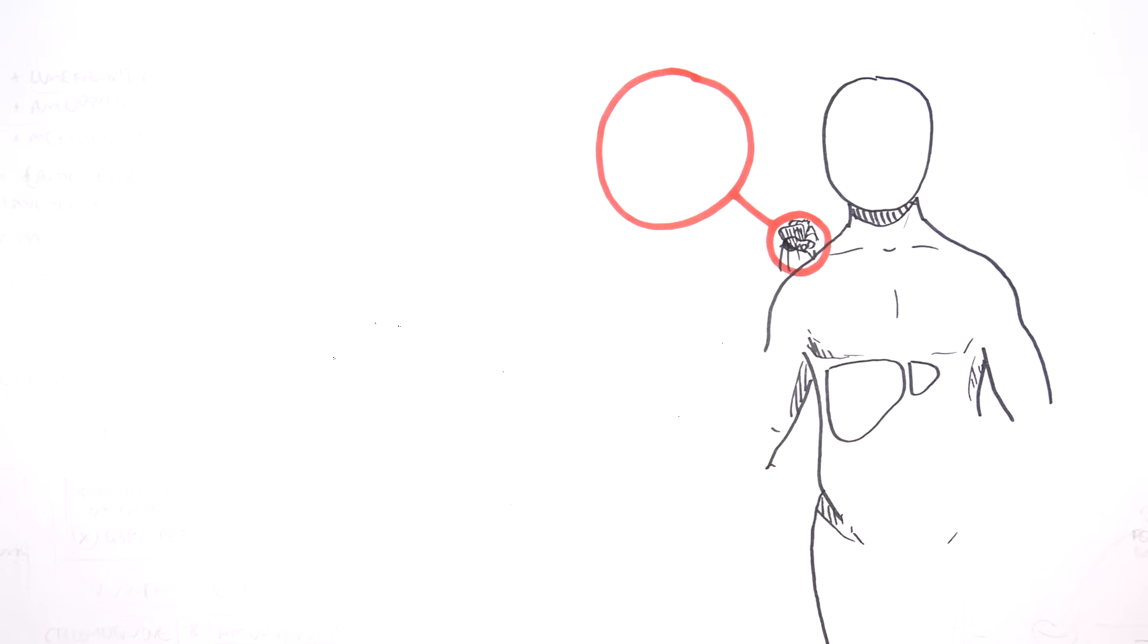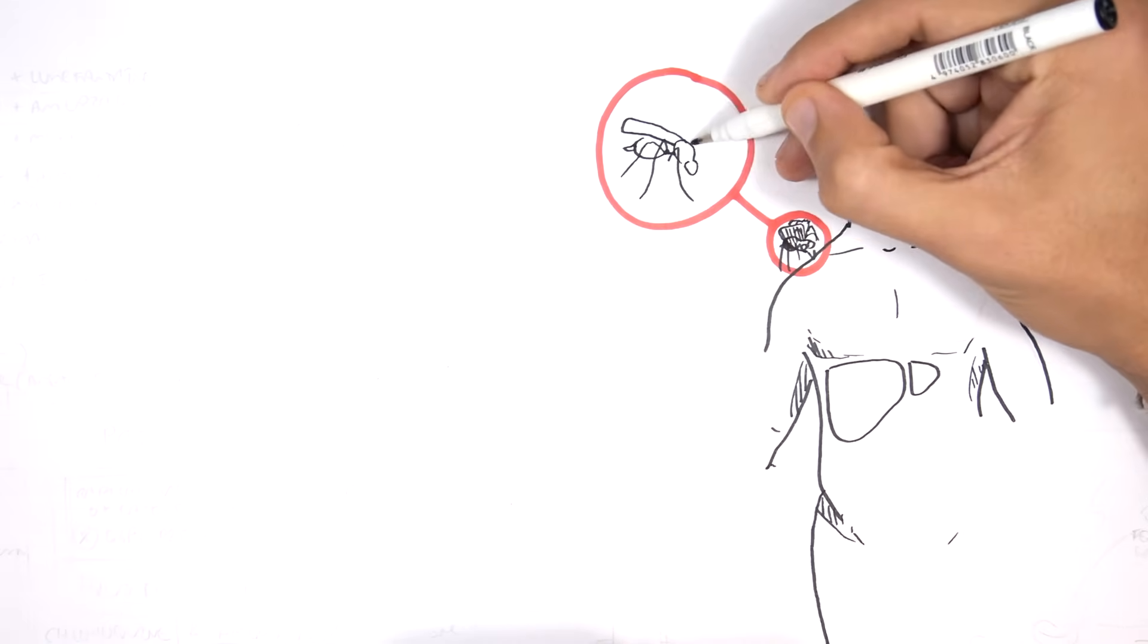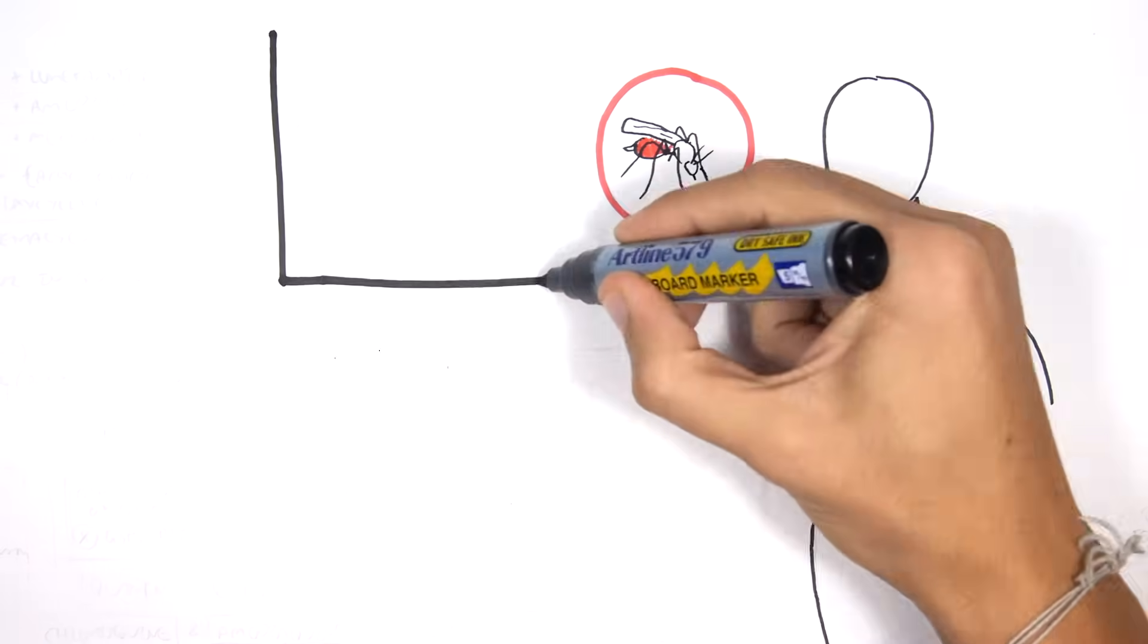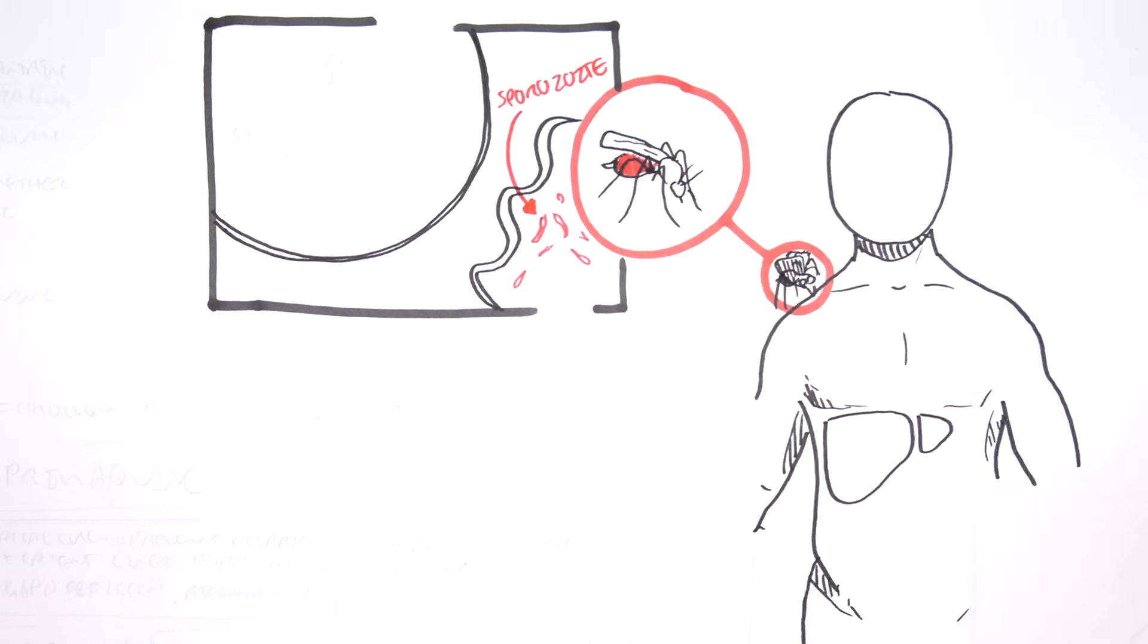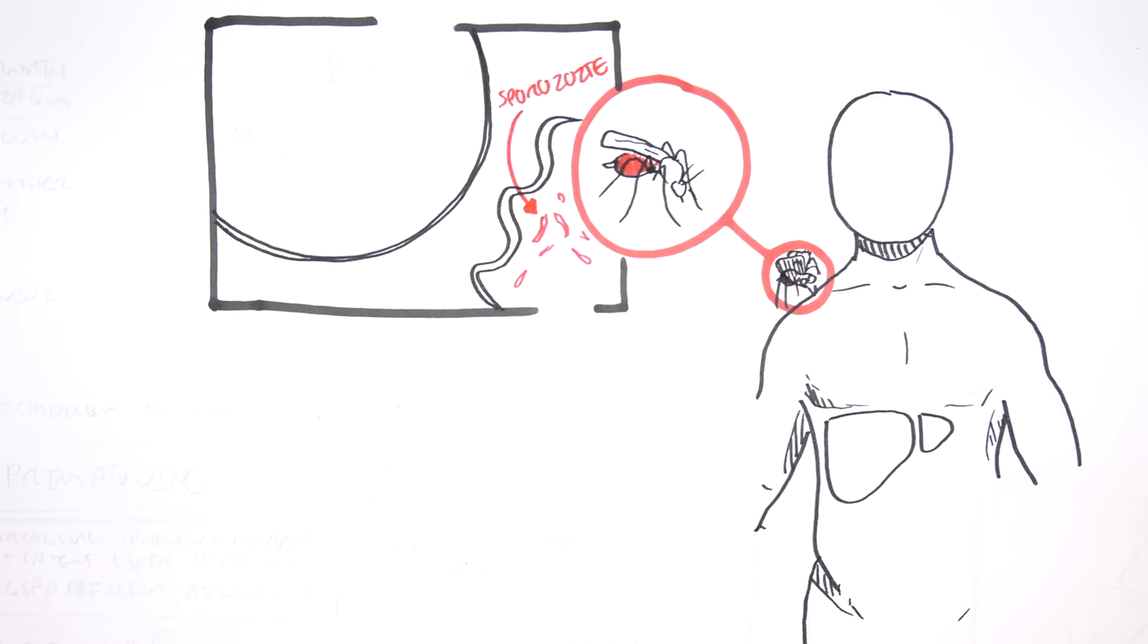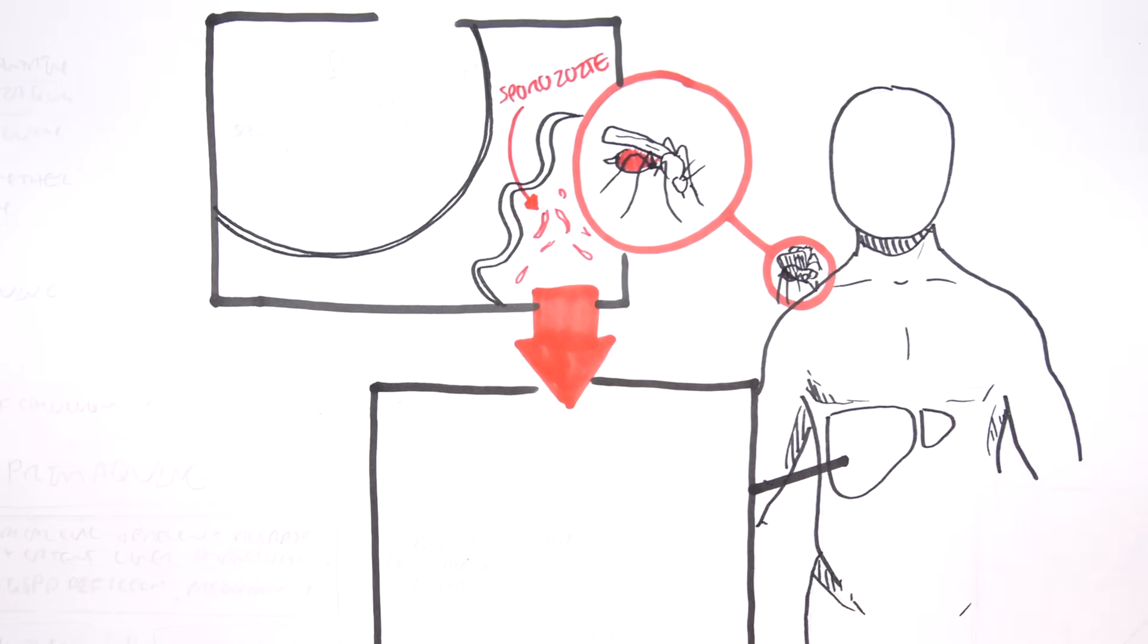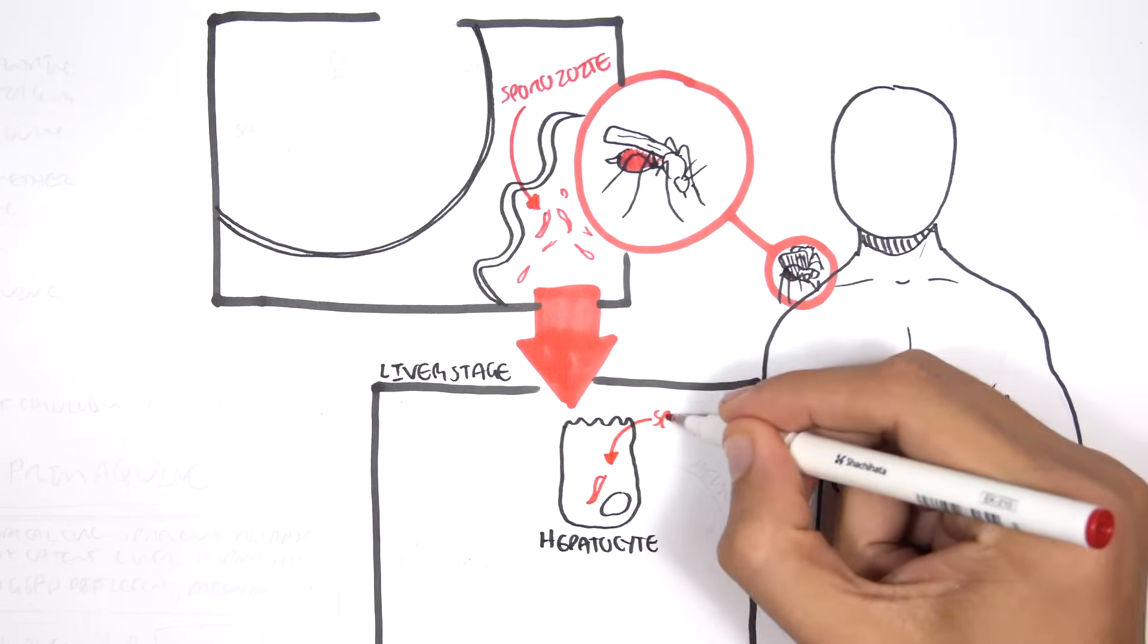The parasite responsible for malaria are the plasmodium parasites. The plasmodium parasite is carried by a female Anopheles mosquito infected with the parasite. The Anopheles mosquito carries the parasite in its salivary glands as sporozoids. The sporozoids is a form the parasite is in when it enters the human body.